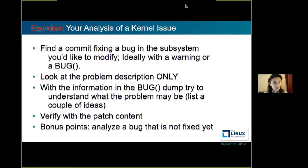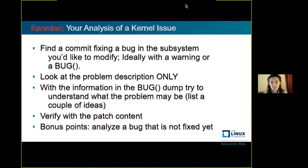An exercise for you: find a commit fixing a bug in a piece of kernel code that interests you. Ideally, if there's a warning or a bug, it's easier. Look only at the description of the problem and try to find out what's happening. You may list a few ideas about what's going on, and then verify with the patch itself what the problem really was. Of course, if you can analyze a problem that isn't fixed yet, you get bonus points.